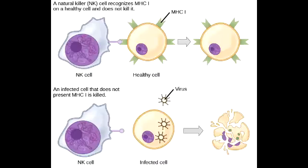What are the natural killer cells? Natural killer cells are a type of cytotoxic lymphocyte critical to the innate immune system. Remember, these are the only lymphocytes that are part of the innate immune system.